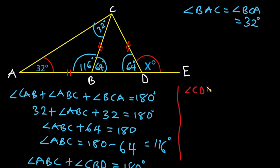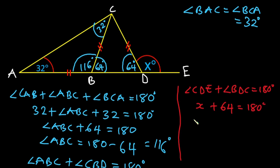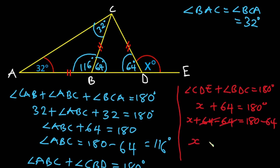Now let's find angle x. Angle CDE plus angle BDC equals 180 degrees, since they are angles on a straight line. Angle CDE is x and angle BDC is 64, so x plus 64 equals 180. Therefore x equals 180 minus 64, which is 116 degrees.